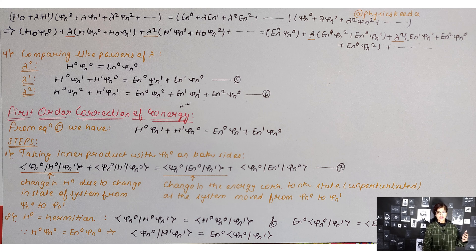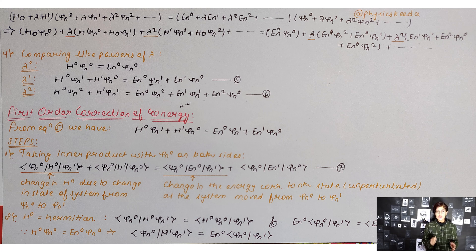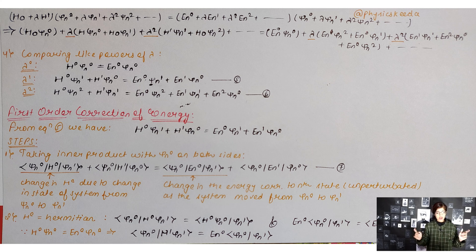For the first-order energy correction, from the λ¹ equation we have: H₀ψ_m1 + H'ψ_m0 = E_n0 ψ_m1 + E_n1 ψ_m0. The first step is to take the inner product with ψ_m0 on both sides.